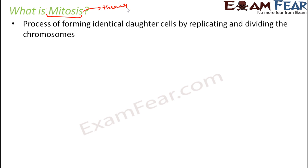Mitosis is a process of forming identical daughter cells by replicating and dividing the chromosomes. By the end of mitosis, the daughter cells produced are exactly identical to each other and also identical to their parent cells. There are two concepts behind mitosis: one is replication and the second is division.